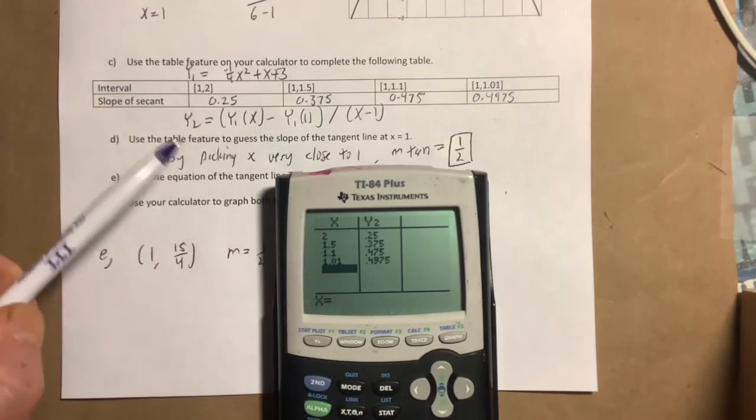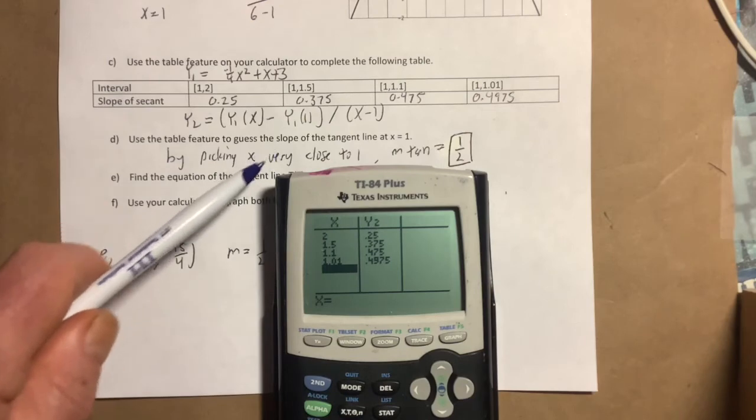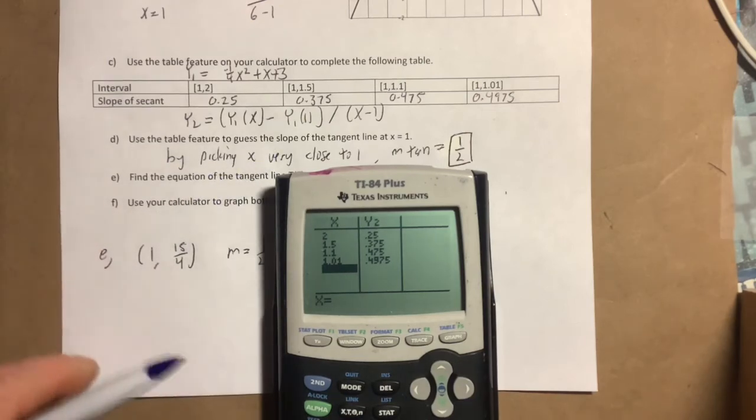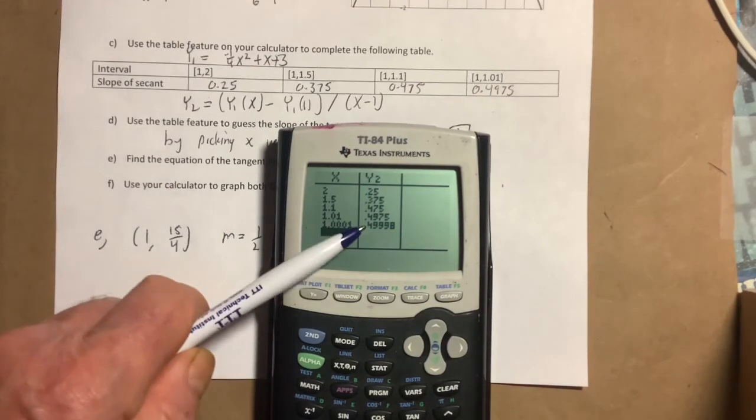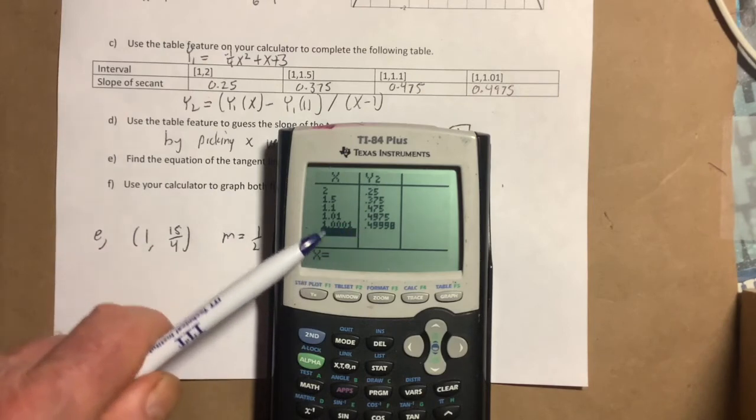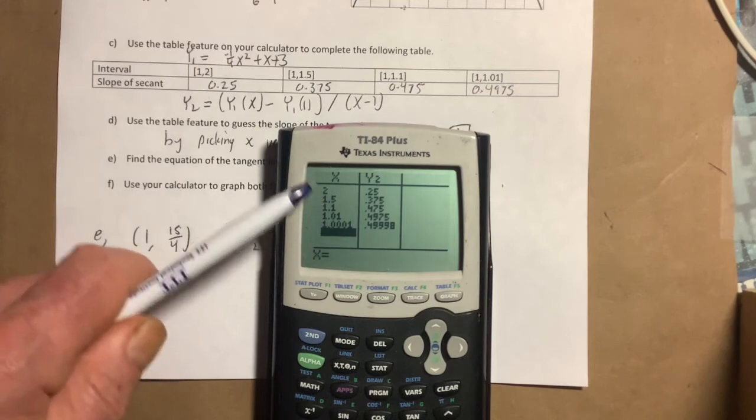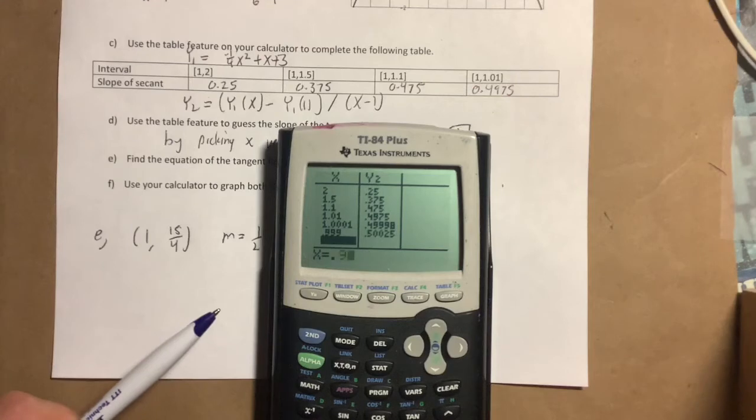The next part is I use the table feature to guess what the slope is. Well, why stop now? Why not get really really close to 1, like how about 1.0001? Looks like it's getting close. It looks to me—I'm going to go on a limb here and say this is getting close to 1 half, 0.5 is what I'm going to guess at. By the way, you should also pick points on the other side of 1 too: 0.999, 0.99999. It should be getting close to 1 half on both sides. Sure enough it is.